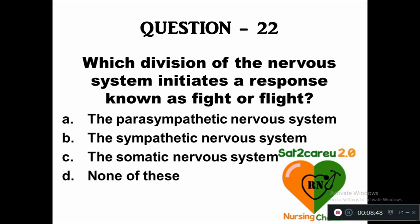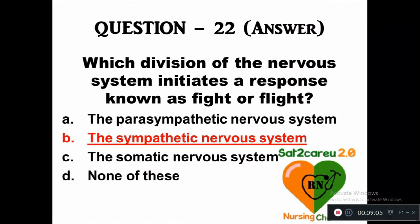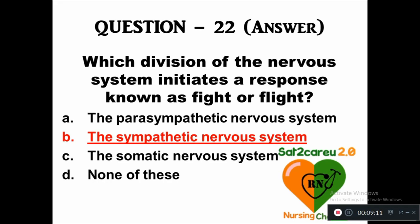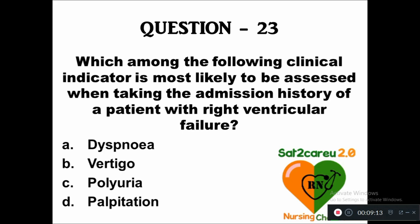Question 22: Which division of the nervous system initiates the fight or flight response — option A: parasympathetic nervous system, B: sympathetic nervous system, C: somatic nervous system, D: none of these. The right answer is the sympathetic nervous system — it stimulates the fight or flight response.